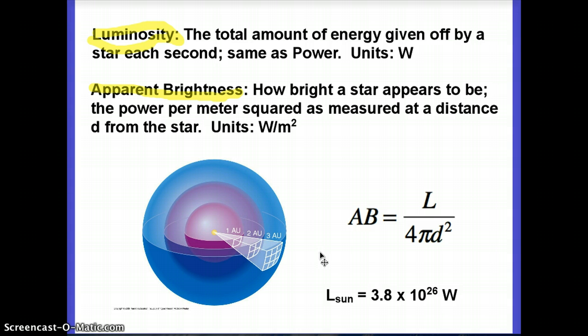If you do some math and calculate that, the apparent brightness of a star is given by its luminosity, the intrinsic thing, the watts, divided by the surface area of the sphere whose radius is this distance that you are away from the star. And the surface area of the sphere is 4π times the distance squared.